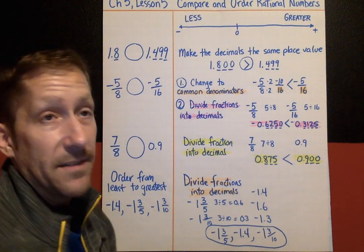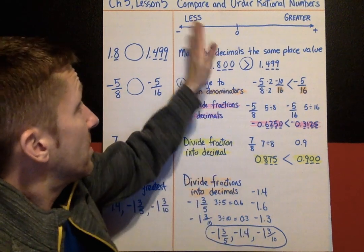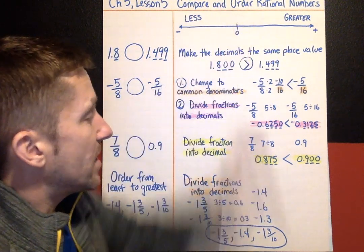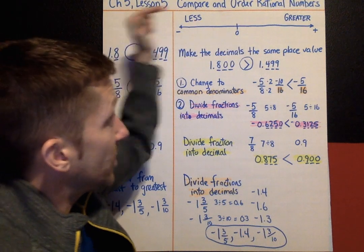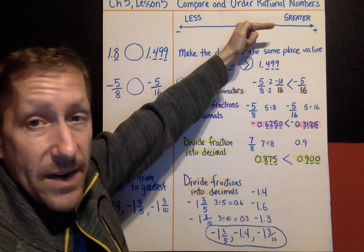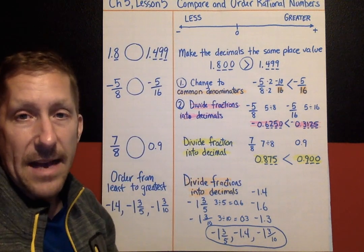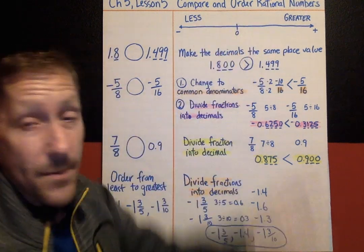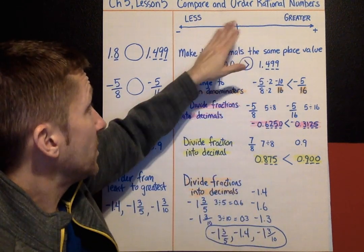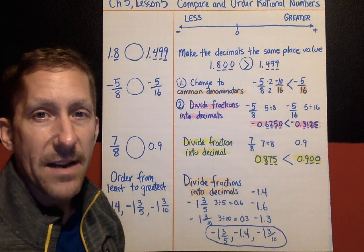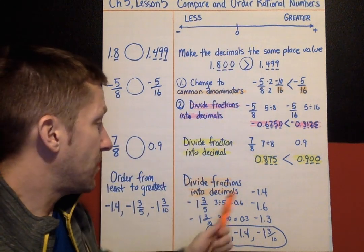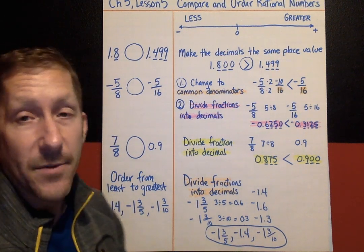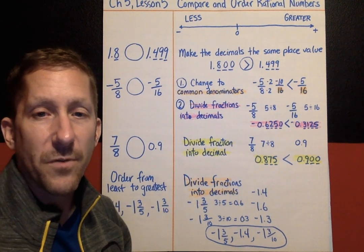That about does it for Lesson 5. Remember: think about where these values would go on a number line. Whichever is further right is greater, and further left is less. Sketch it out or picture it in your mind and place the values where they belong. That's Chapter 5, Lesson 5 — see you for Lesson 6.